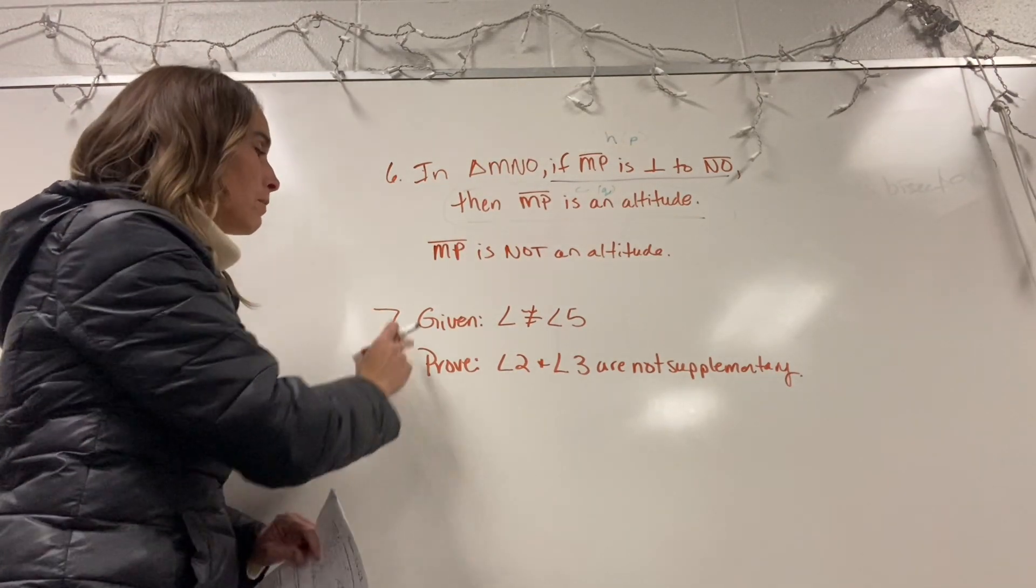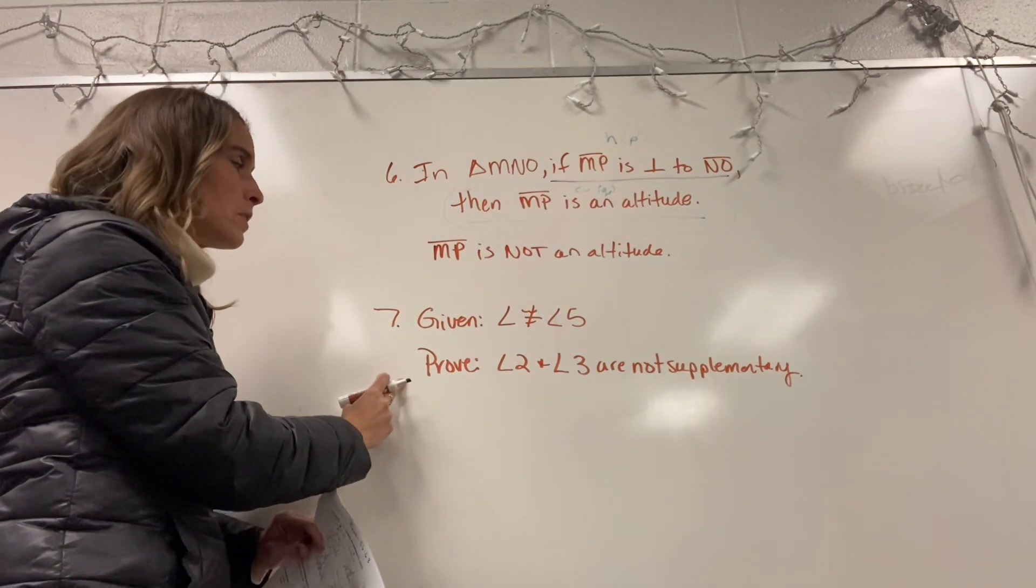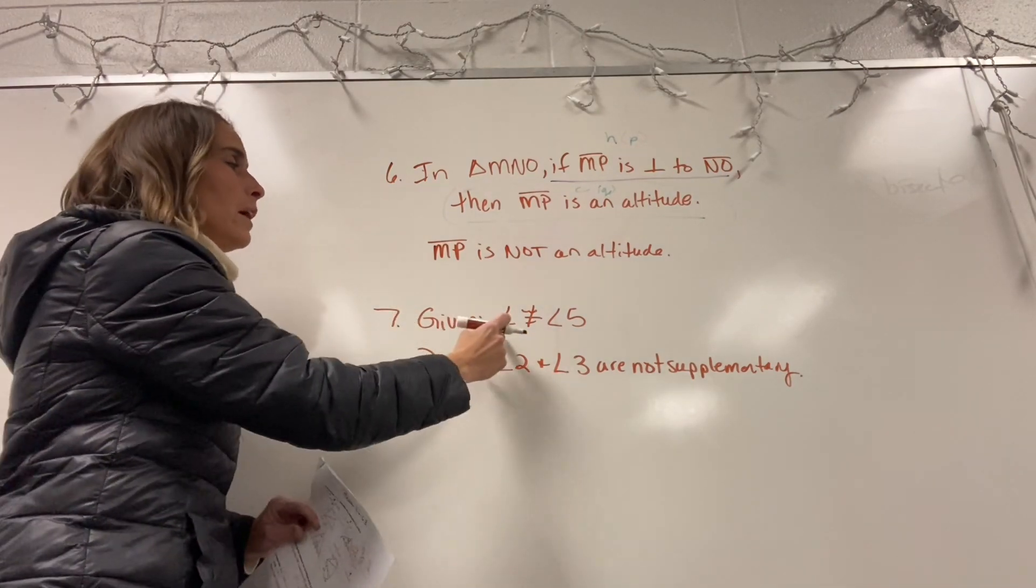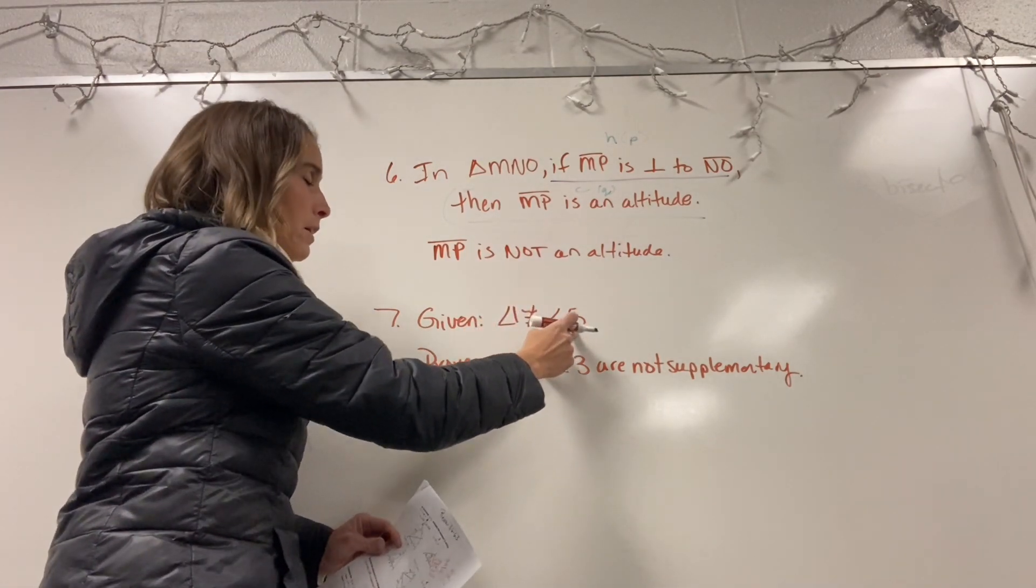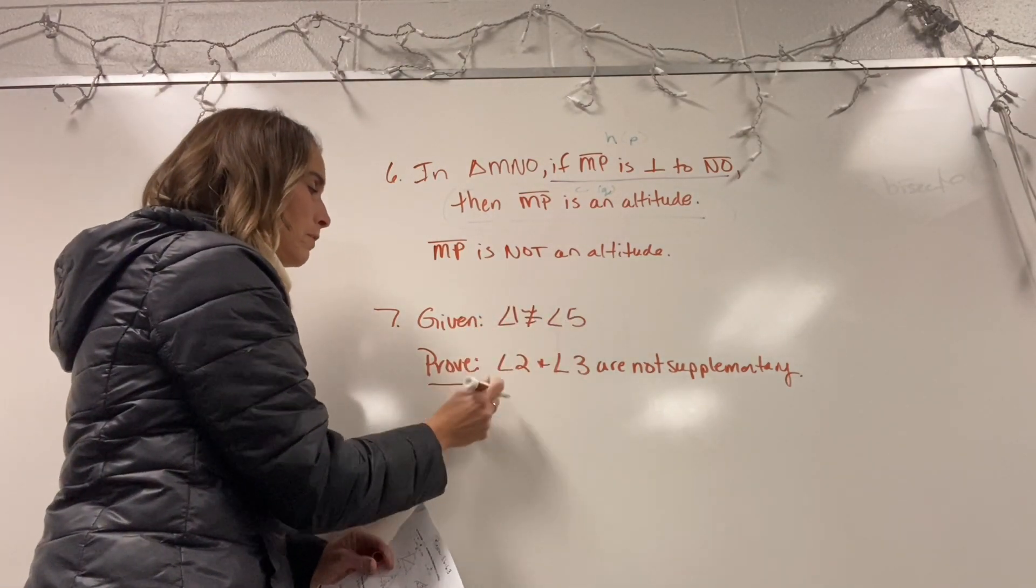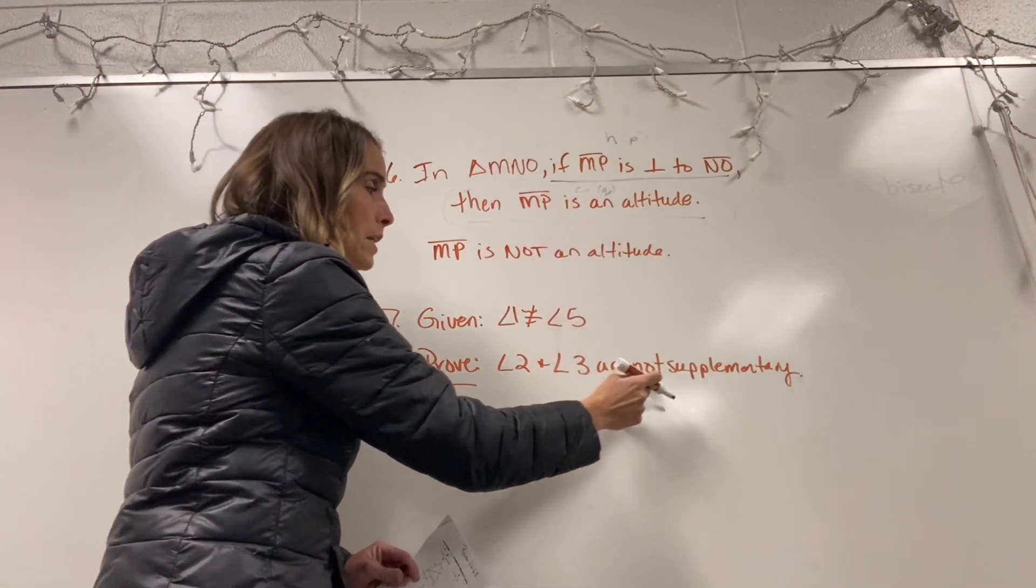Another way to set it up is to give you a given and a proof. So if I've given you the given as angle, whoops, I forgot to put the one in there, angle 1 is not congruent to angle 5, and you are to prove the angle 2 and angle 3 are not supplementary,